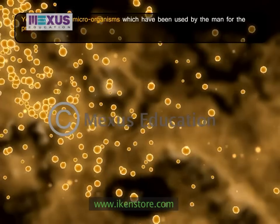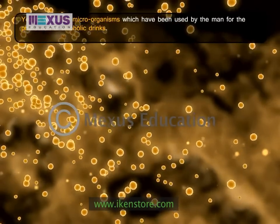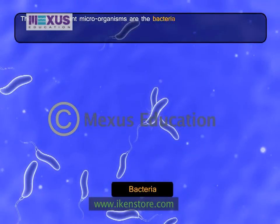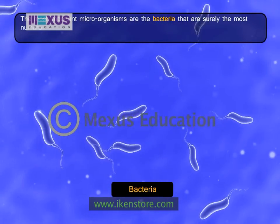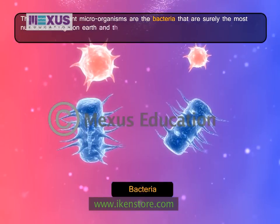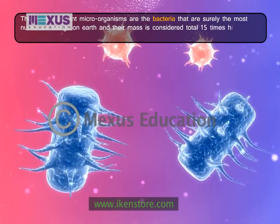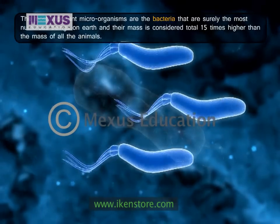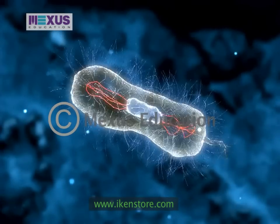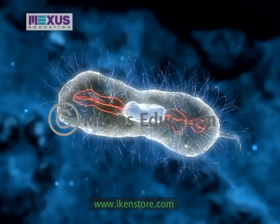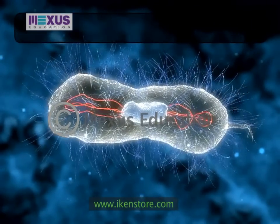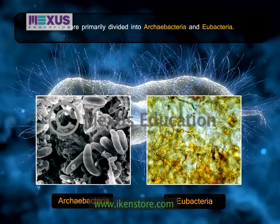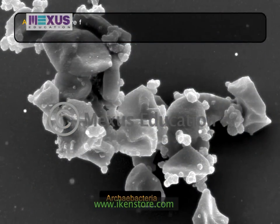The most important microorganisms are the bacteria, which are surely the most numerous beings on Earth. Their total mass is considered to be 15 times higher than the mass of all the animals. Bacteria are prokaryotes and are the simplest forms of life.